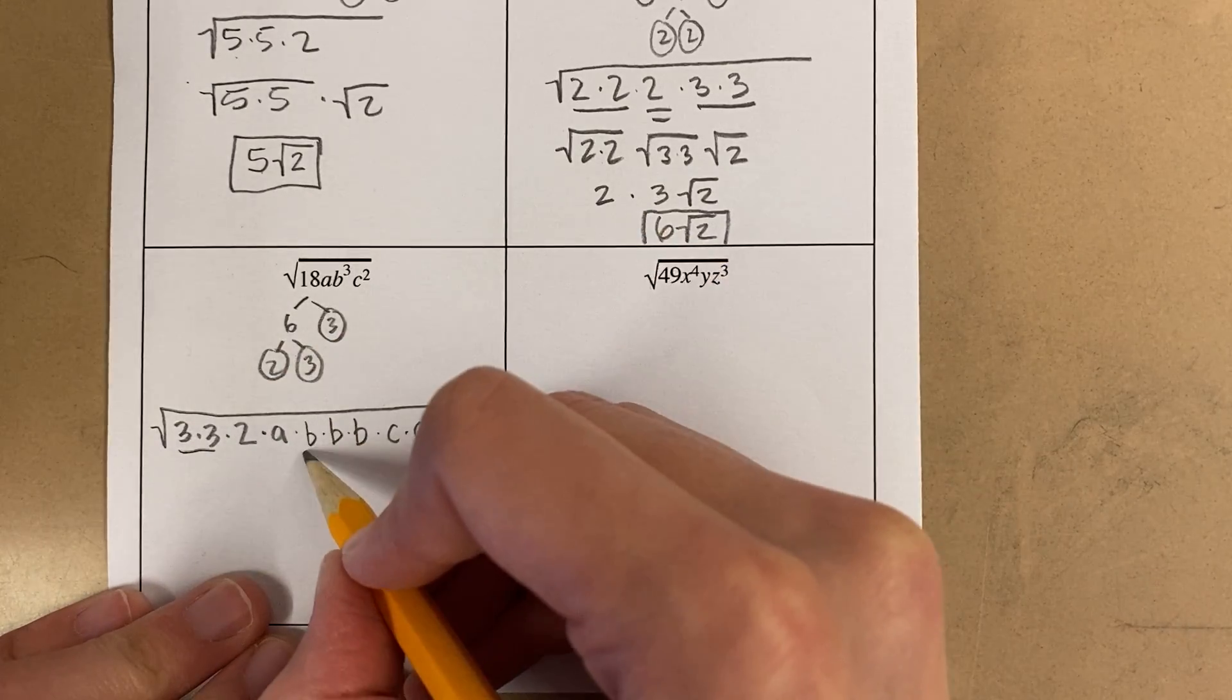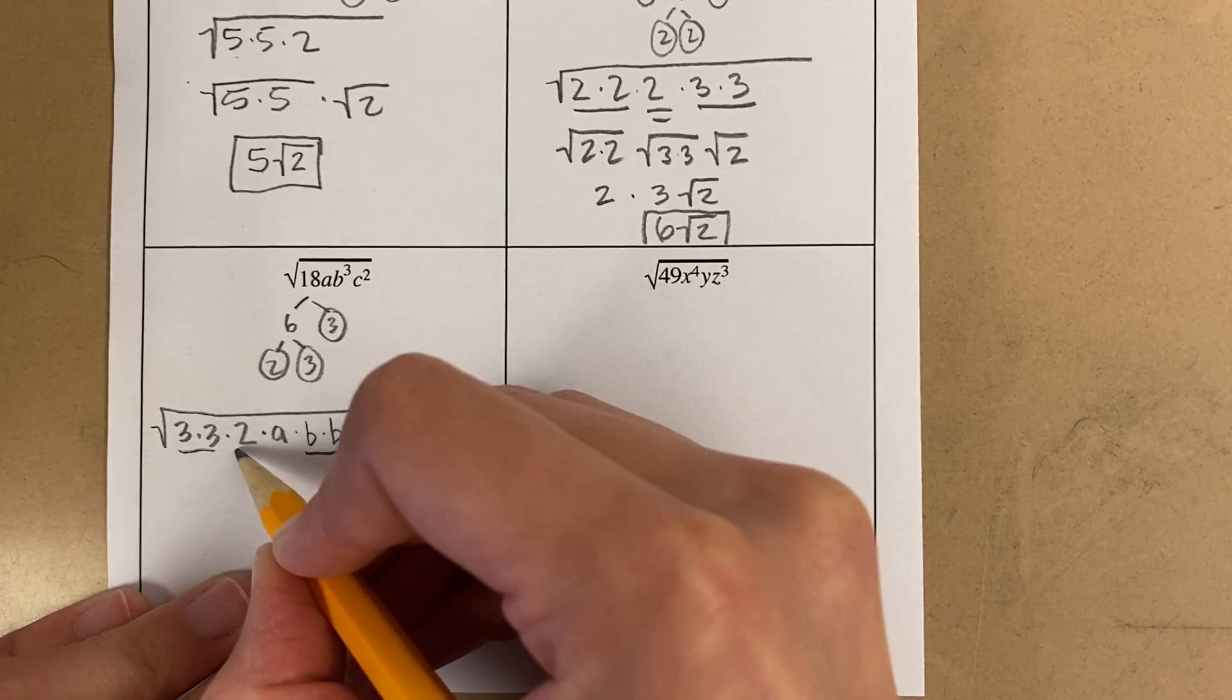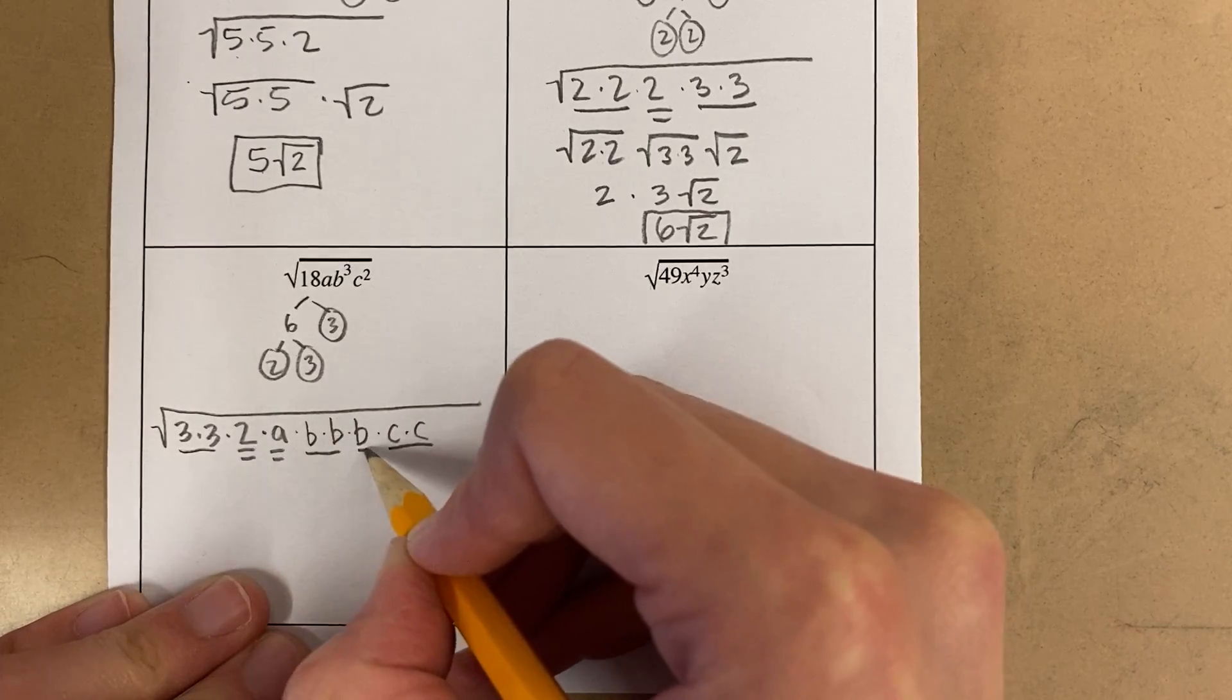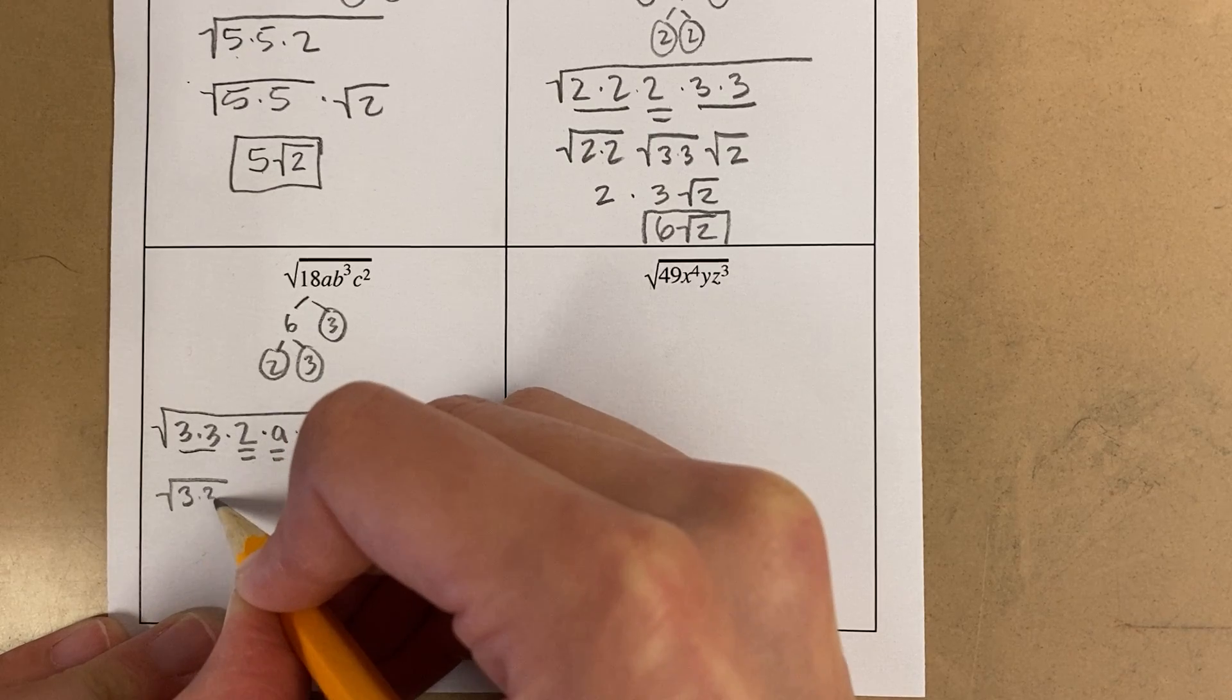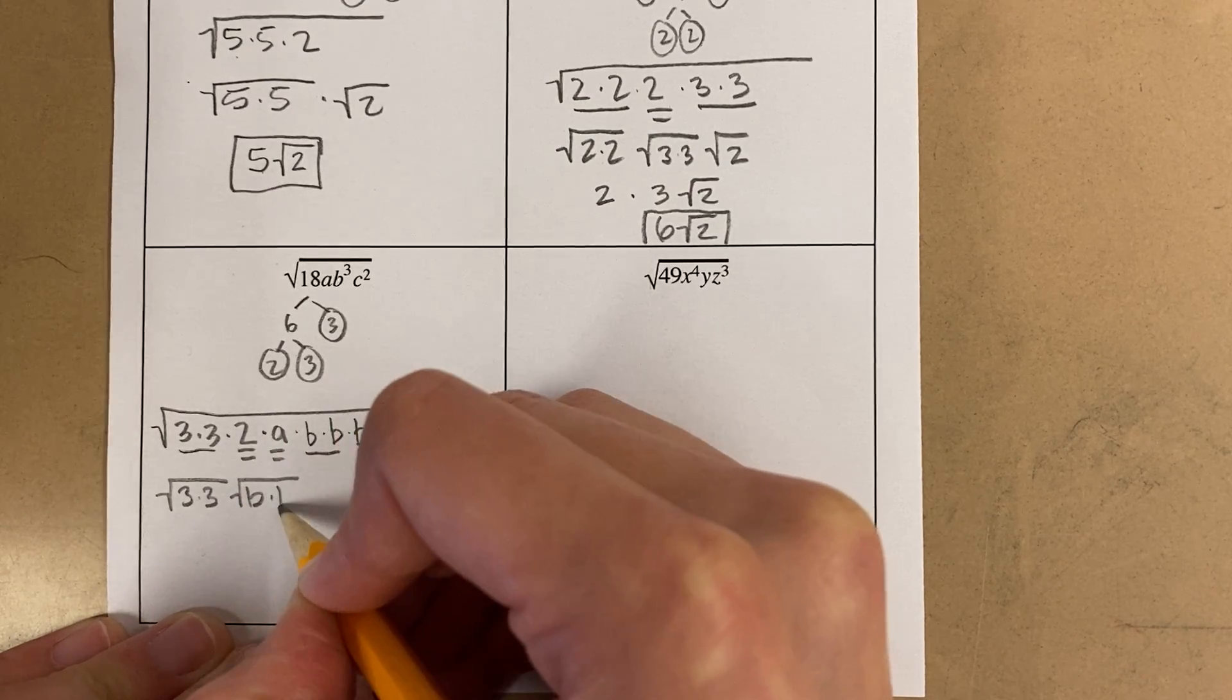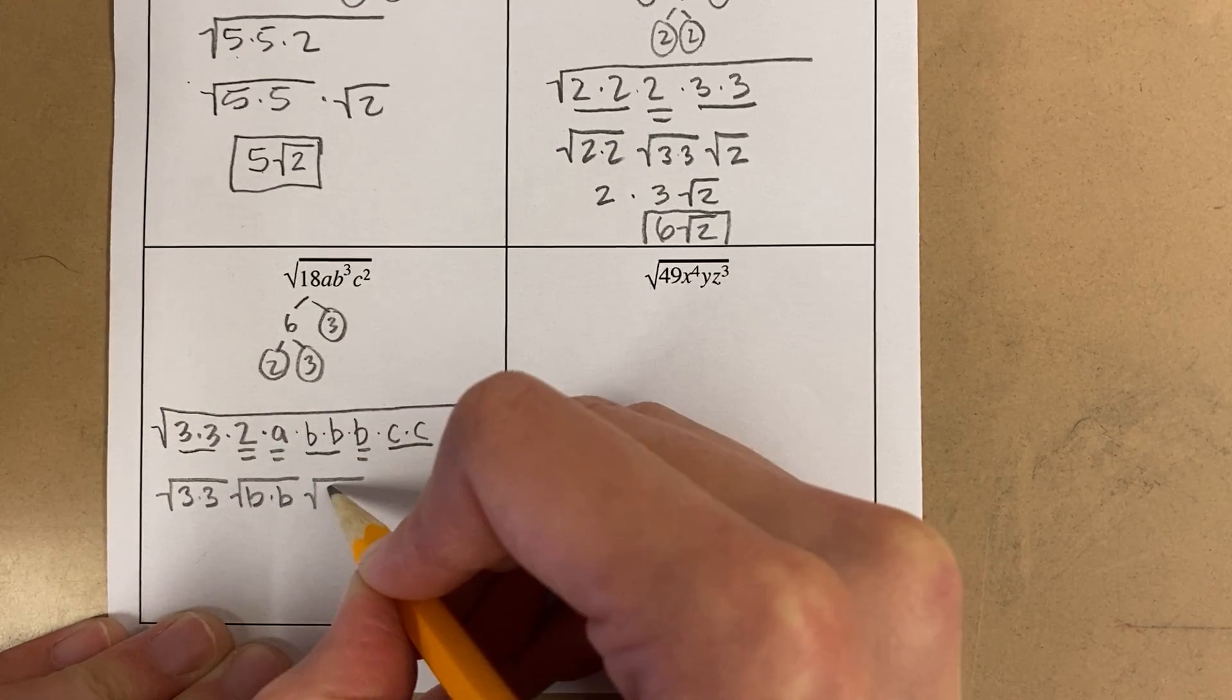Where are my doubles? They're here, here, and here. And where are my singles? 1, 2, 3 things are single. So I have a double 3, a double b, and a double c.